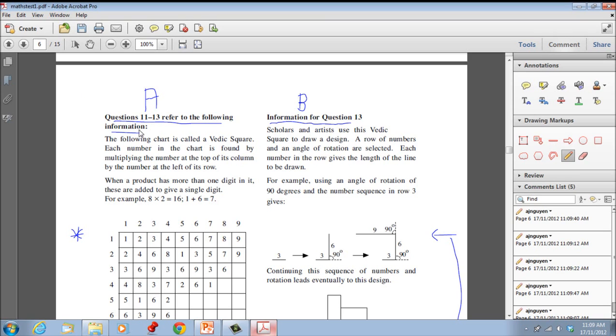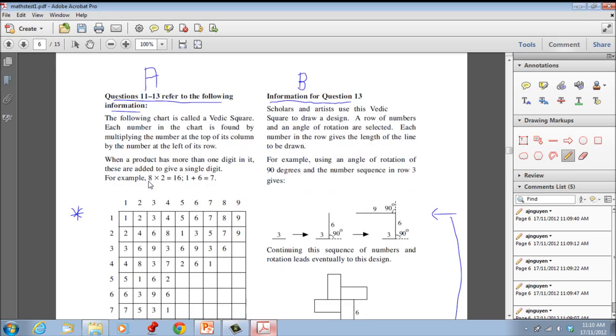Let's go through information A. The following chart is called a Vedic square. Each number in this chart is found by multiplying the number at the top of its column by the number at the left of its row. When a product has more than one digit, these are added to give a single digit. For example, 8 times 2 is 16, 1 plus 6 is 7. So this is pretty straightforward.